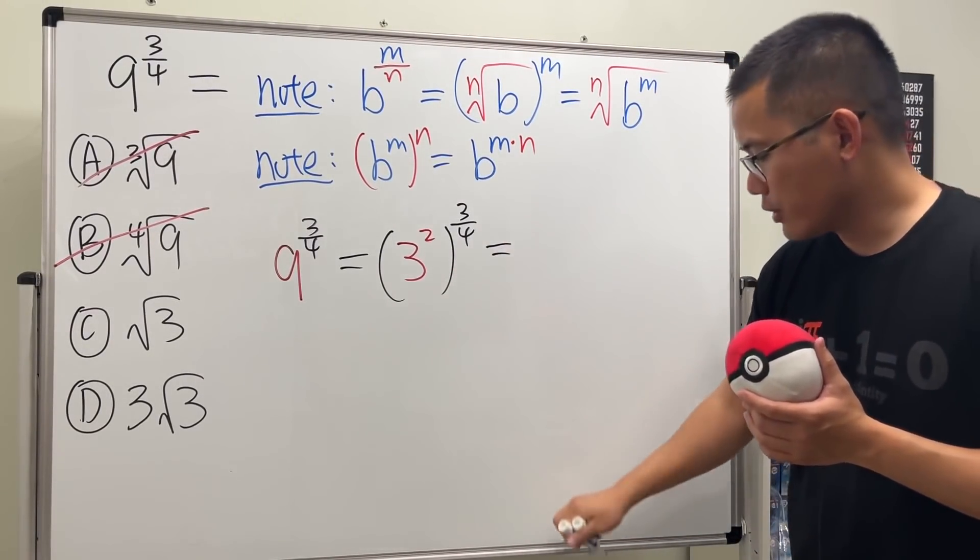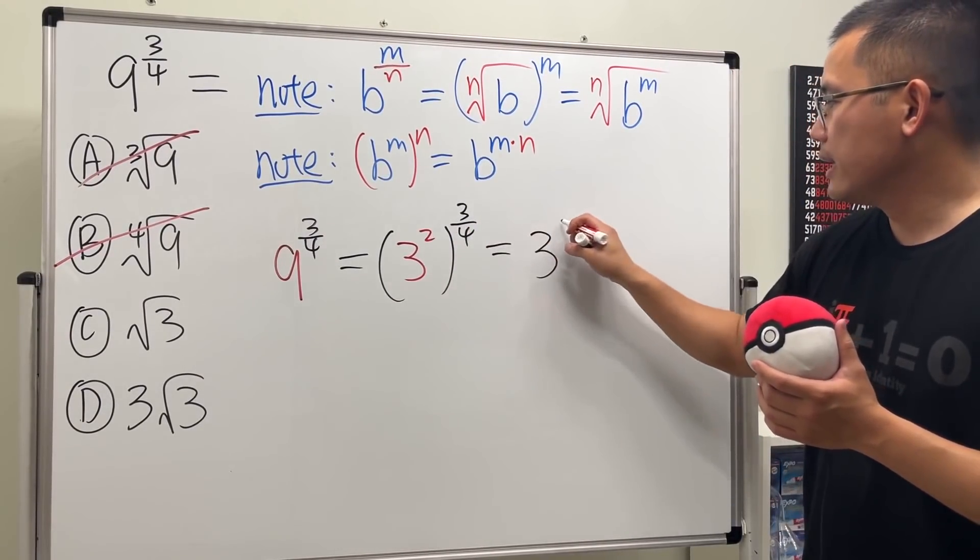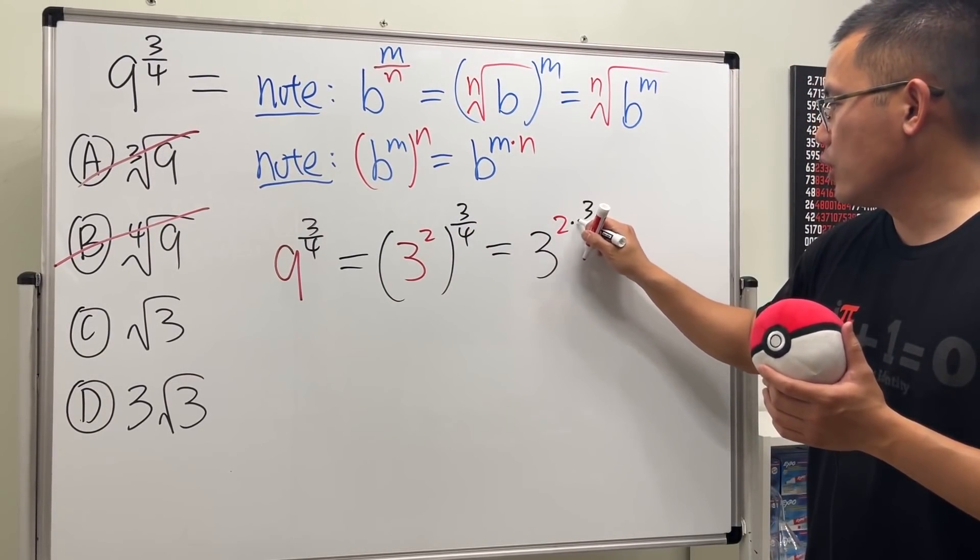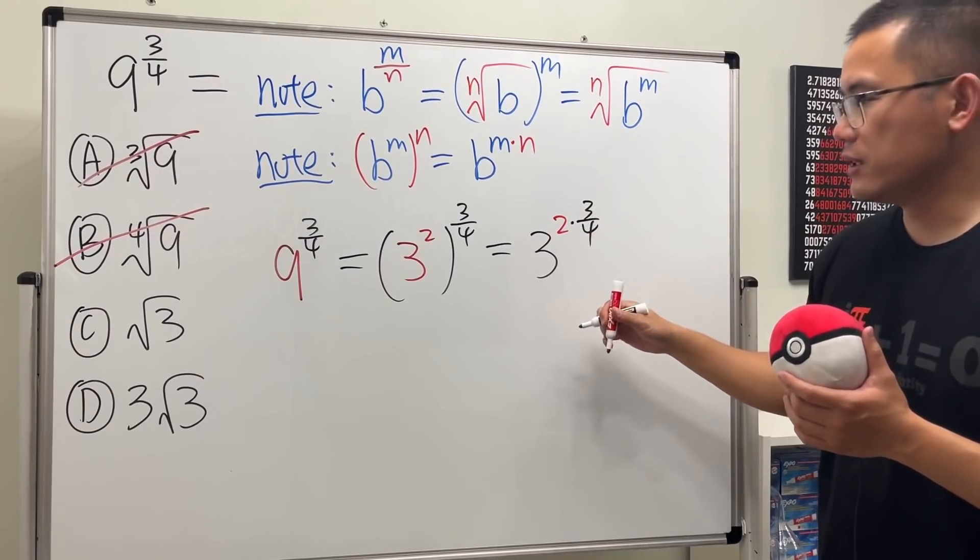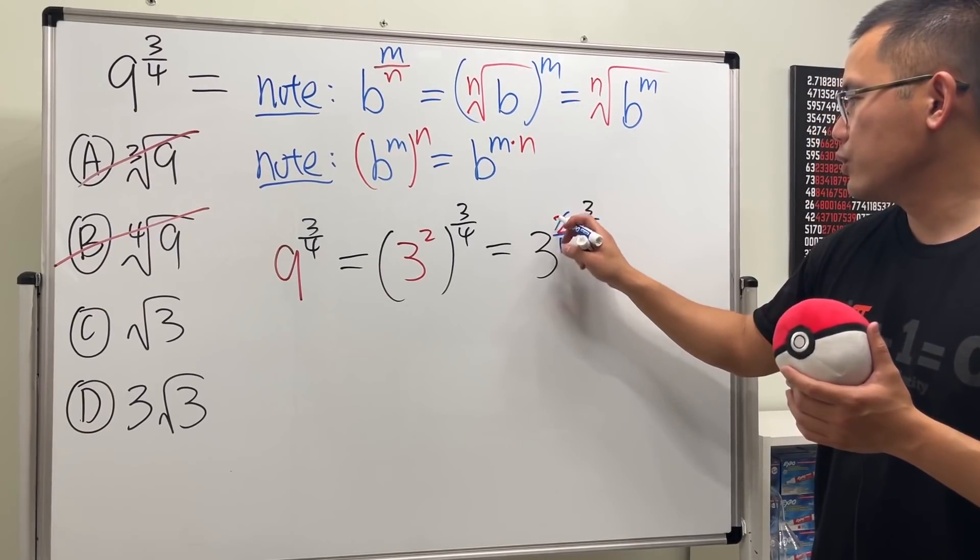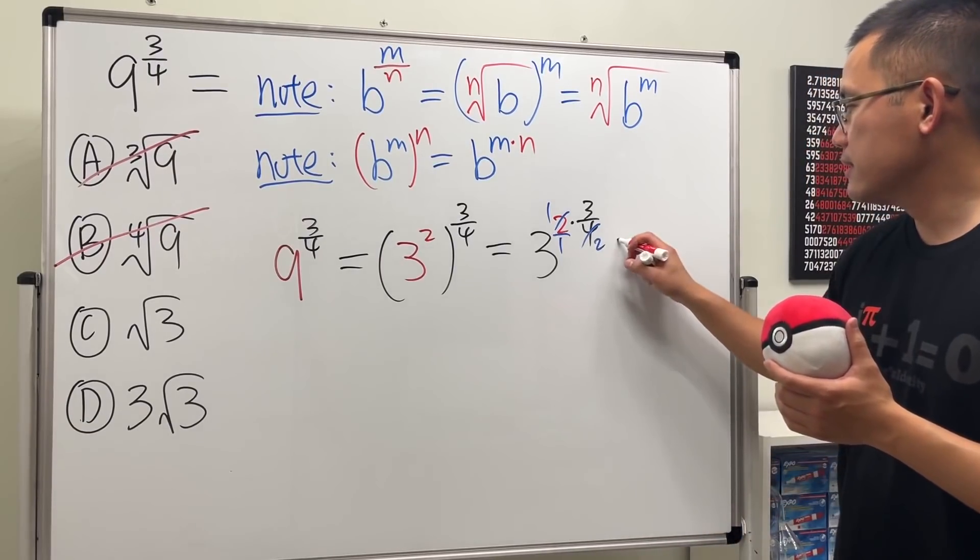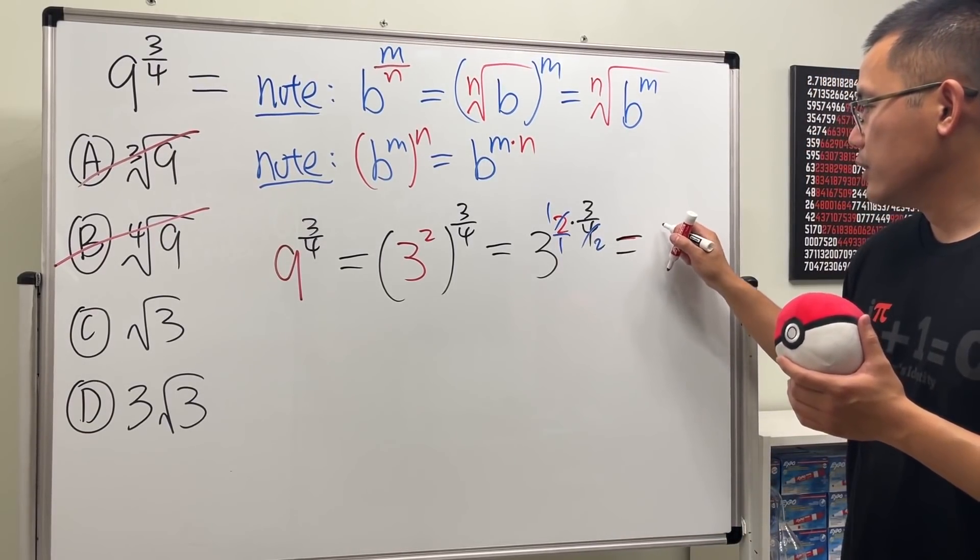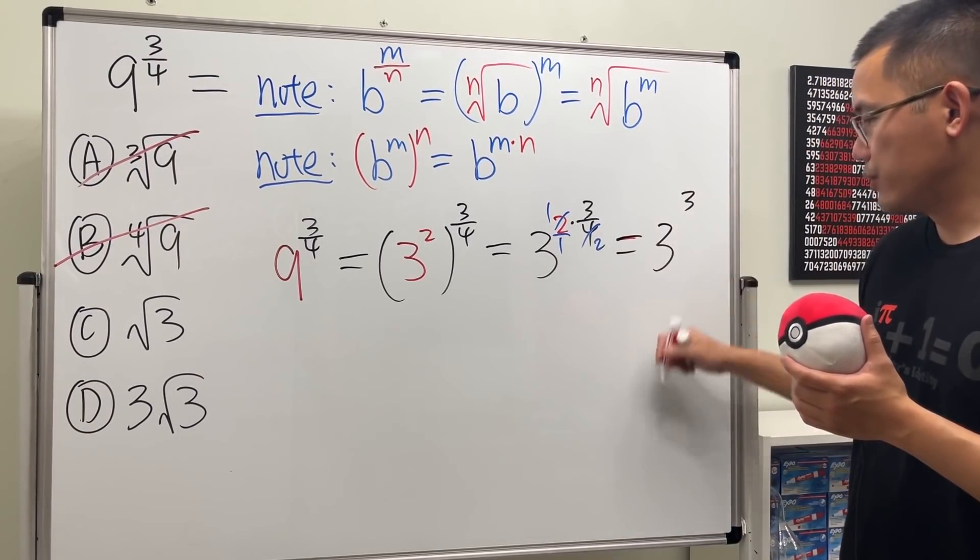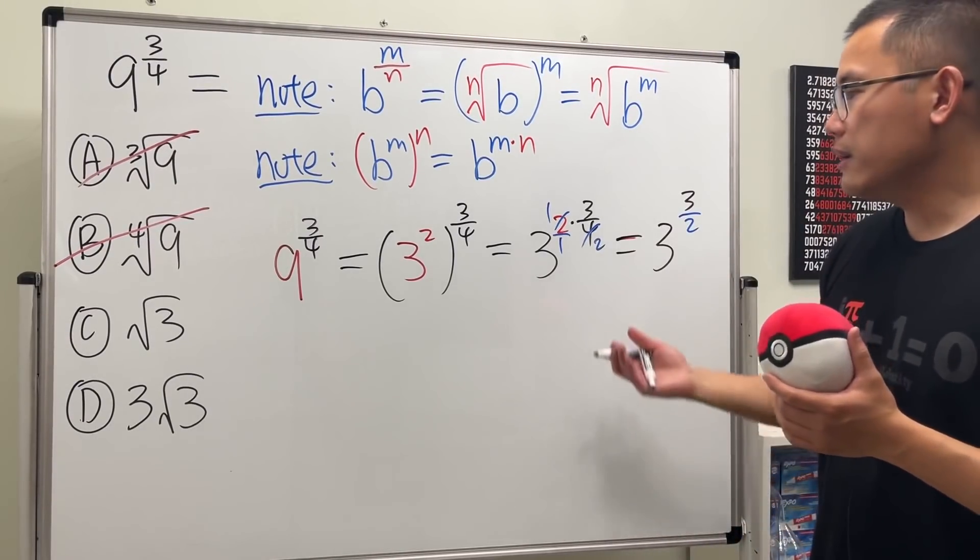So right here we can say this is going to be three, and then we multiply the two and these three over four. And of course we can reduce the fraction. This right here, it's two over one, and then two goes into two once, two goes into four twice. So in fact, this is the same as three to the three over two.